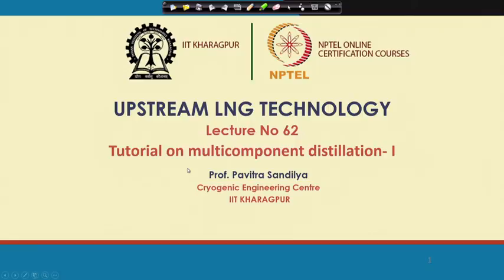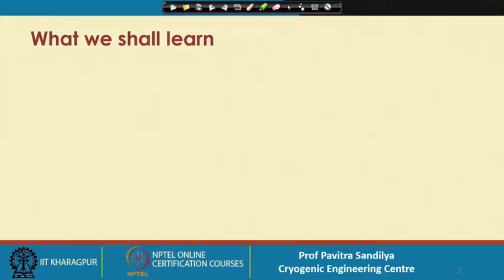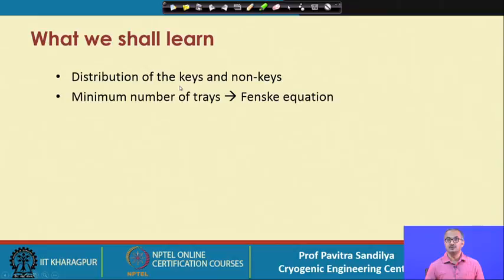Welcome. We have learnt about some basic analysis procedures for multi-component distillation, including various shortcut methods and correlations to find the minimum reflux, the minimum number of ideal stages, and the actual number of stages depending on the actual reflux. In this lecture, we shall look into problems for multi-component distillation — part 1 — covering the distribution of keys and non-keys and the determination of the minimum number of trays using Fenske's equation.